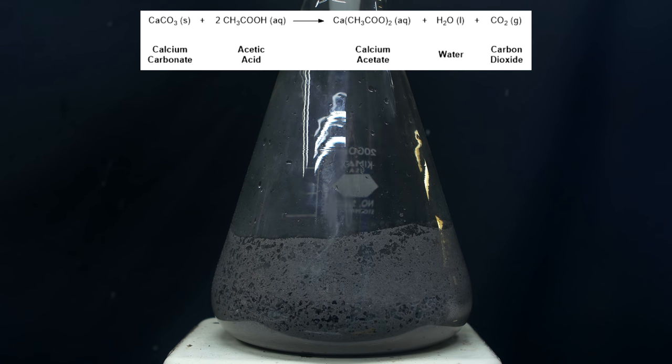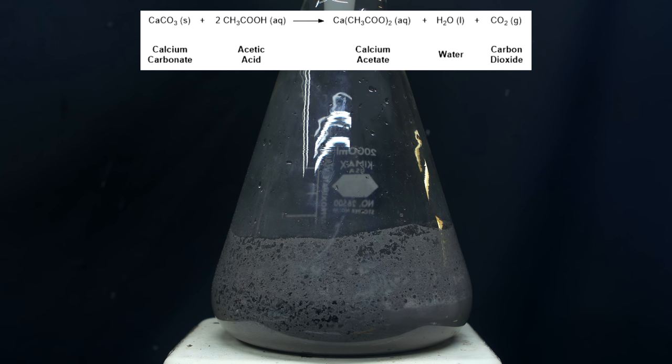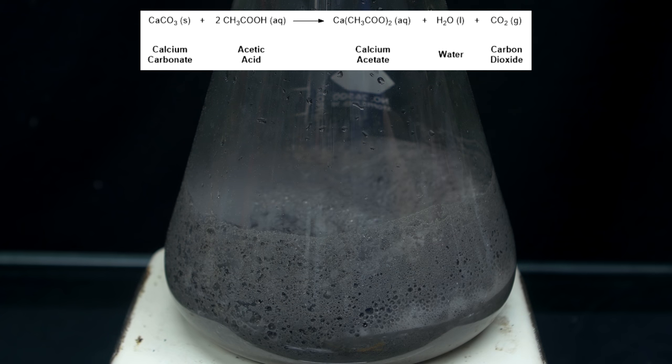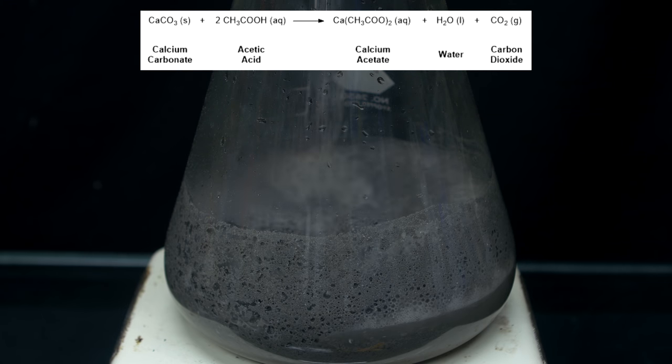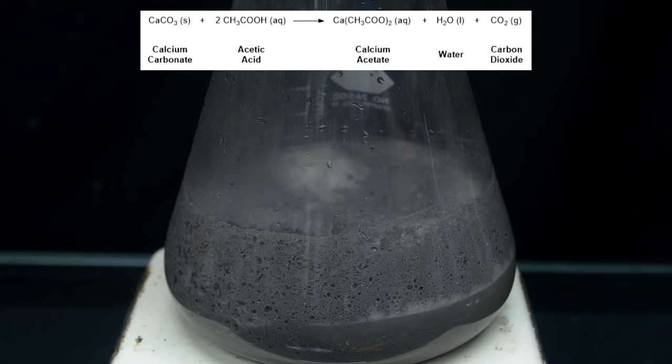What we're doing in this step is we're reacting calcium carbonate with acetic acid in vinegar to form carbon dioxide, water, and calcium acetate. The calcium acetate that's formed is soluble in water, so it dissolves into the water right when it's formed, but the CO2 is a gas and it bubbles out.